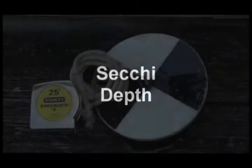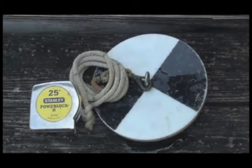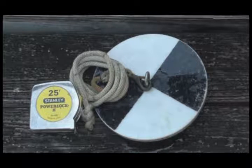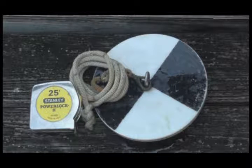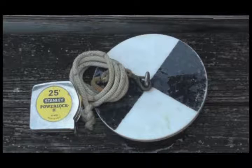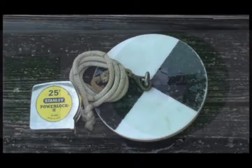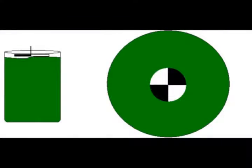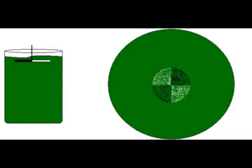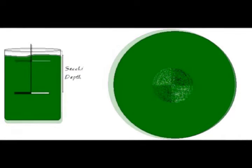The final pond characteristic we looked at was the secchi depth. This is important in determining if a pond needs to be fertilized. To do this, you will need a secchi disc, which you can make yourself, and a tape measure. By measuring how far down in the water column you can see a secchi disc, we can estimate the density of the algae population. This is important to make decisions about fertilization and the need for aeration.